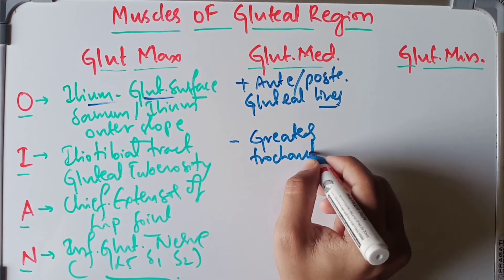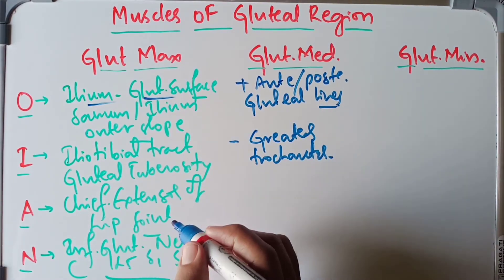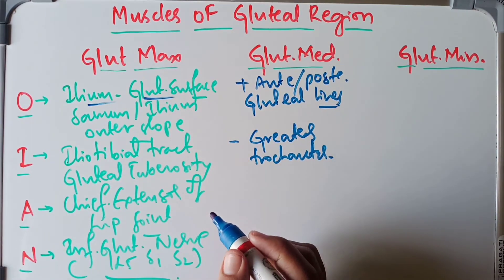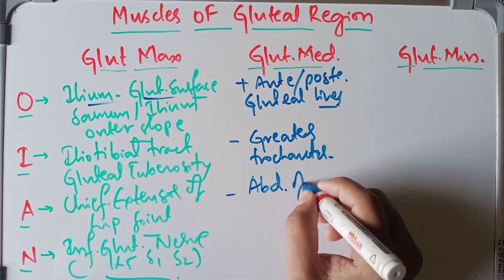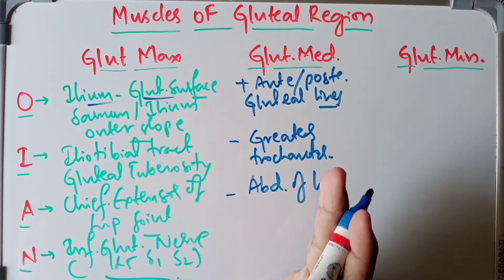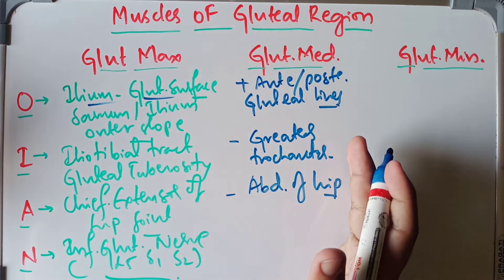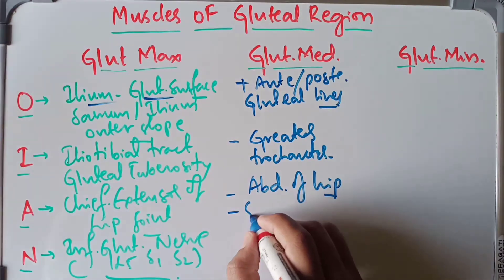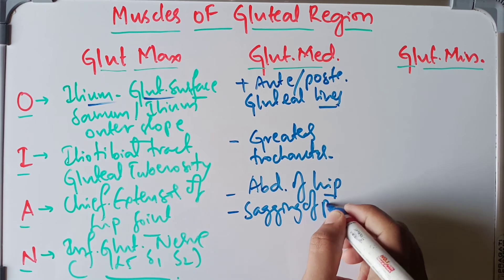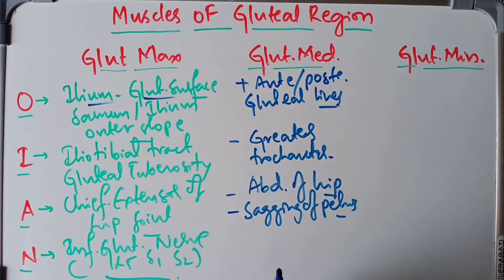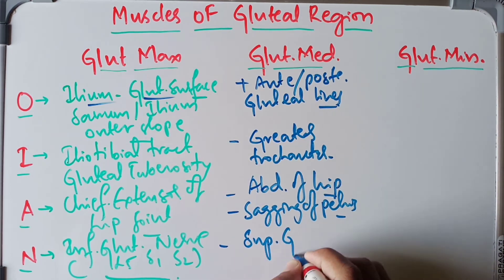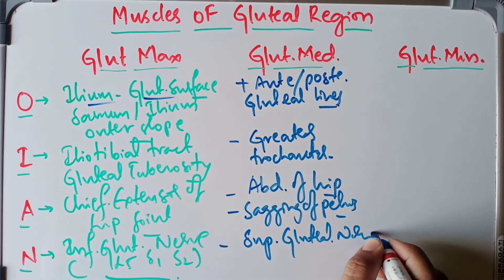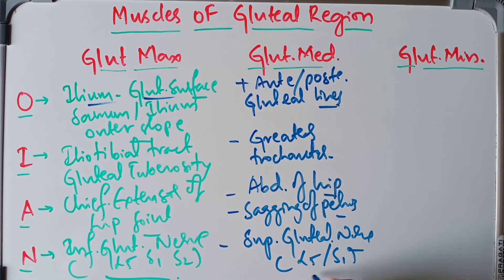The action of the gluteus medius is abduction of the hip joint. It also prevents the sagging of the pelvis on the unsupported side. Its nerve supply is the superior gluteal nerve, arising from spinal segments L4 and S1.